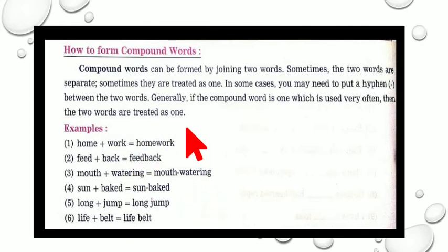For example, your pizza, your burgers, even the paani puris. Yes or not? Sun-baked. Long has got different meaning than jump. But when you bring them together, they are known as long jump. That is one of the games which the athletes perform. Then life plus belt. Life, belt. So these are the compound words.